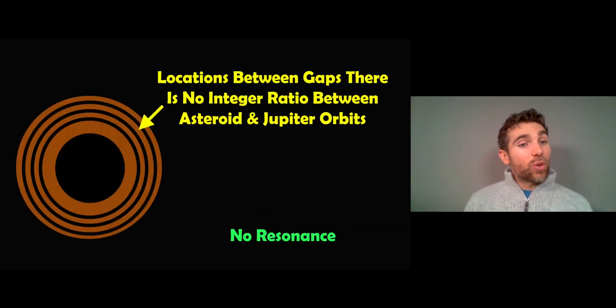Now the locations between the gaps, you don't get those resonances. So as you move further out between the gaps, you just don't get an integer ratio of the orbits. So between like 3 to 1 and 5 to 2, you don't get the ratios as you would do. So there's no resonance occurring there. So actually the orbits of the asteroids are not massively affected, which means they can remain where they are. And then you move further out and you get to another point when you get a resonance occurring, which will then clear that area out.